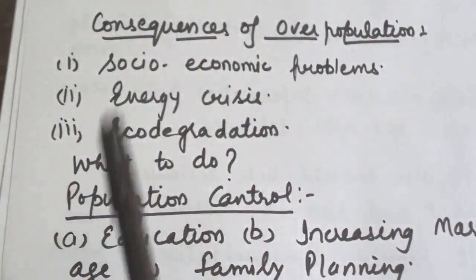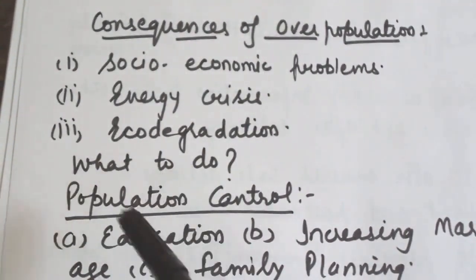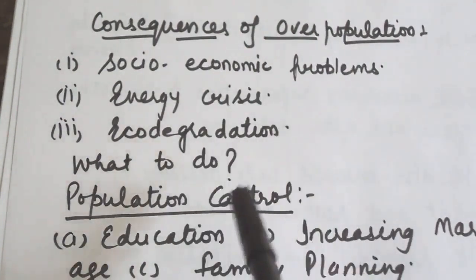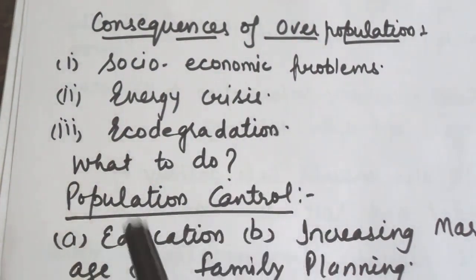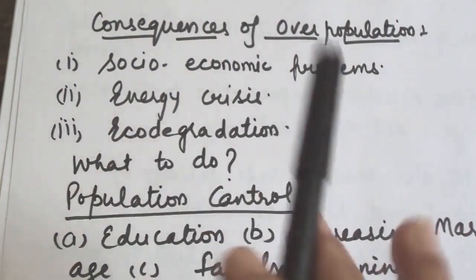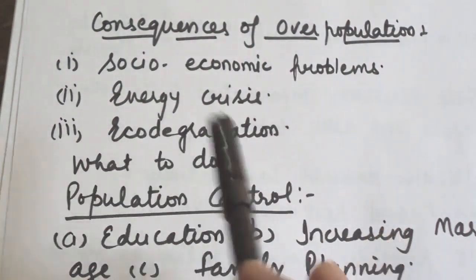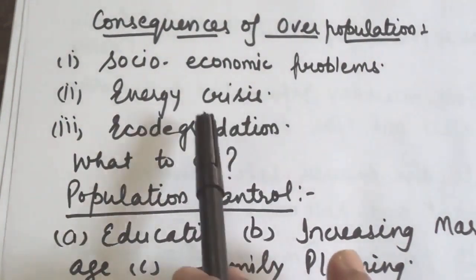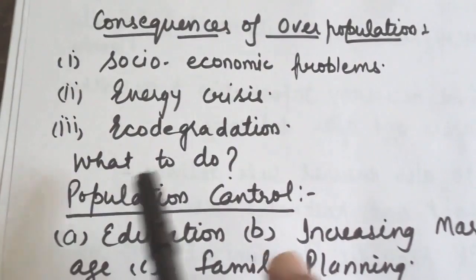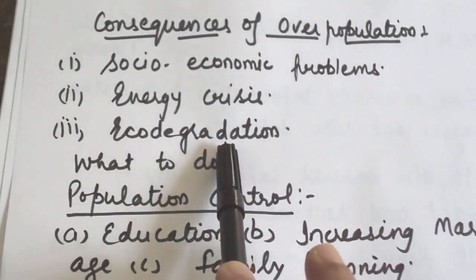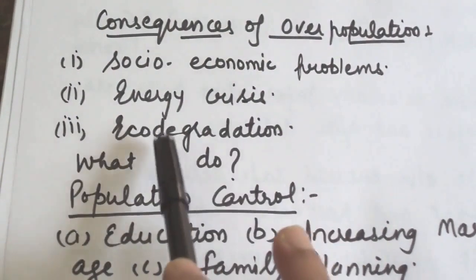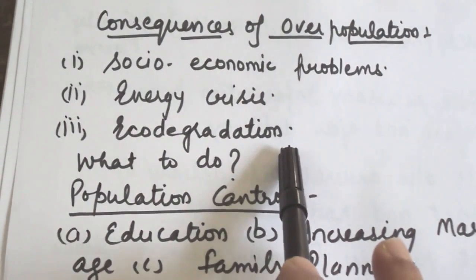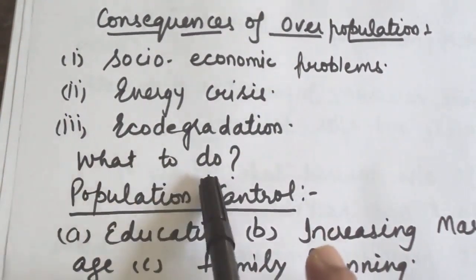Next is energy crisis. Increase in population has created greater demand for energy, fuel and electricity. Rapid industrialization and urbanization have added to these problems, making it necessary to find alternate sources of energy. Last is eco-degradation. Overpopulation causes eco-degradation. Rise in population has caused pollution of the environment — water pollution, air pollution and land pollution — which seriously affects human health.